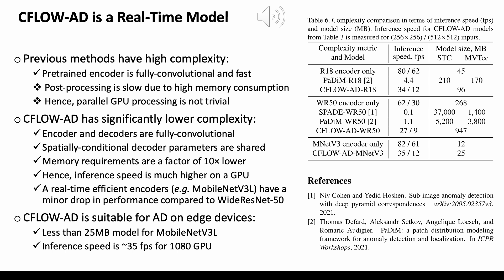C-Flow AD is a real-time model because it addresses problems of slow post-processing in prior methods. It is faster because both the encoder and decoders are fully convolutional with a translation-equivariant architecture that shares parameters. That is why the memory size of our model is a factor of 10 smaller. We also experiment with efficient encoder architectures like MobileNet V3 and show only a minor drop in performance compared to larger Wide ResNet 50. The pre-trained models we provide on GitHub are less than 25 megabytes and the inference speed is around 35 fps on a 1090 GPU.